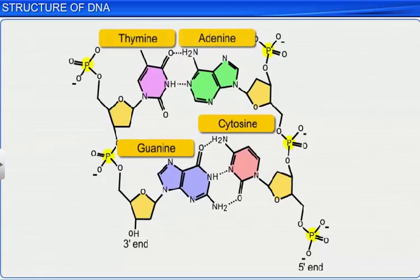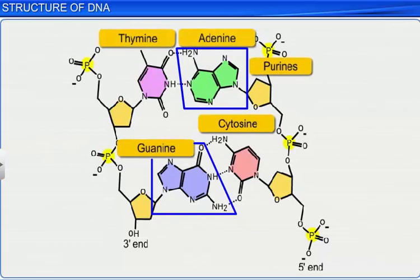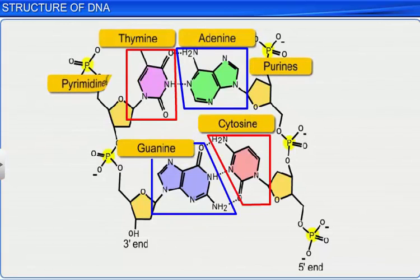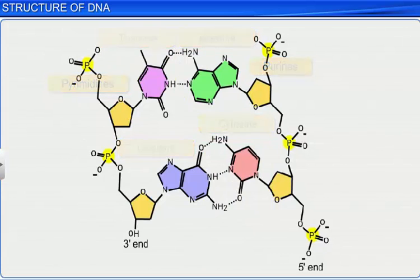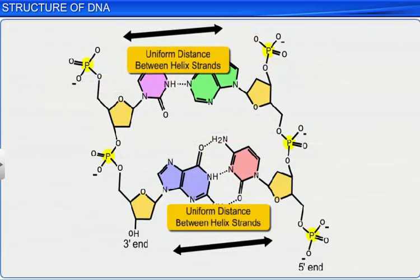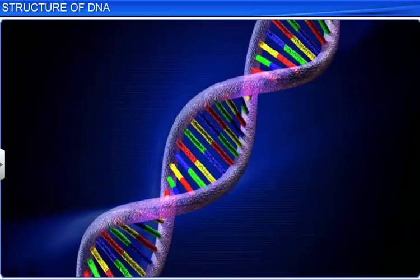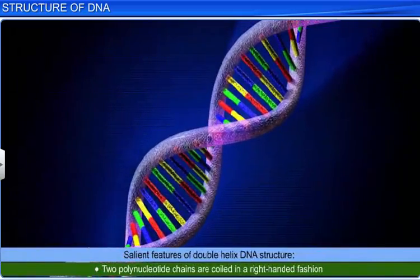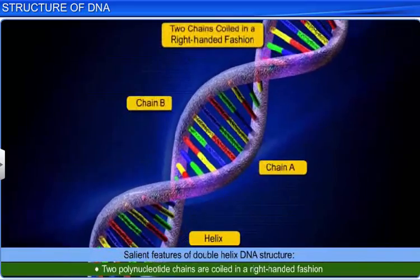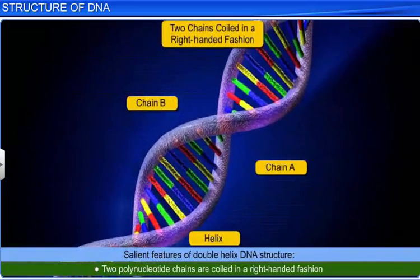Because of this structure, a purine always comes opposite to a pyrimidine, which results in a uniform distance being maintained between the two helix strands. Another salient feature of the helix structure is that the two chains are coiled in a right-handed fashion.